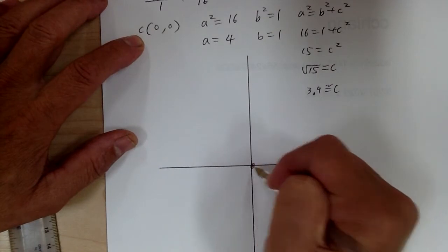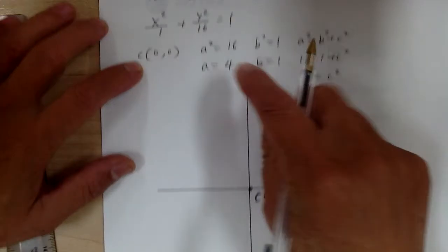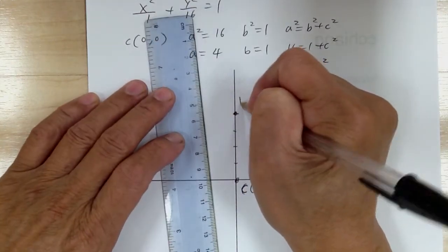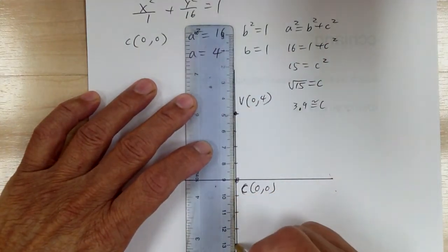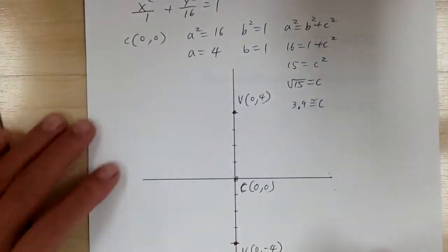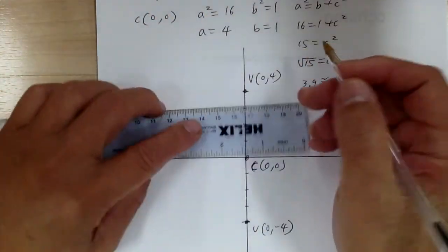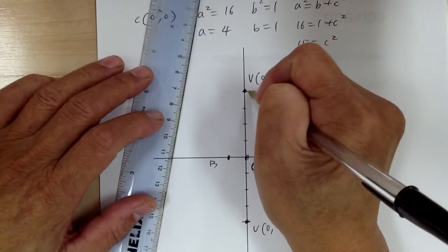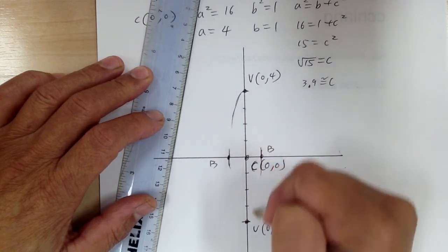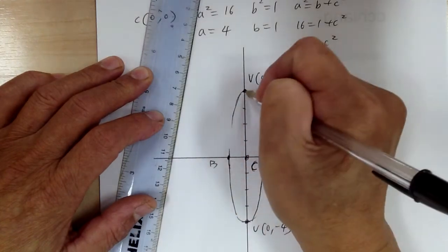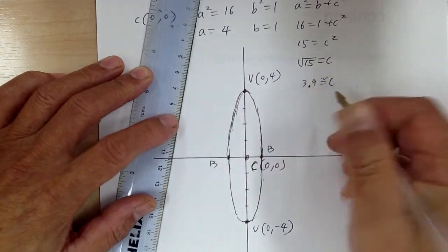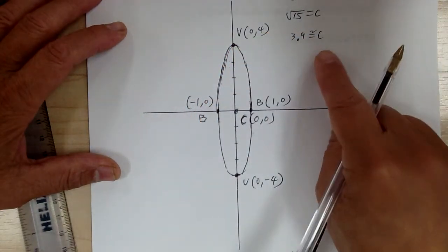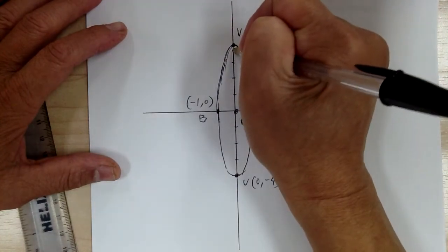Let's sketch. Center at (0, 0). Go 4 in the y-direction — that's the V. Go 1 in the x-direction — that's the B. The focus distance is about 3.9, so it's very close to the vertex.